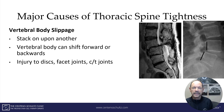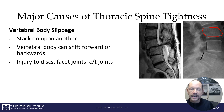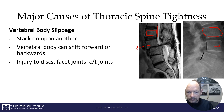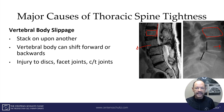The next cause is vertebral body slippage. The vertebral bodies are the bony building blocks that stack one on top of the other and constitute the spine. Unfortunately, due to injury or trauma or both, you can have slippage of one or more vertebral bodies either forward or backward — this is called an anterior listhesis. This can cause significant injury to the disc, the facets, and the ligaments, thereby causing thoracic spine tightness.